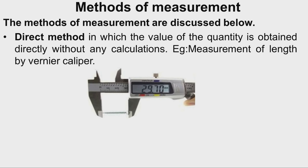Direct method measurement is fast, but there are disadvantages. If you apply more pressure, the moving jaw may compress the workpiece and we may get the wrong result. So sense of feel is very important in this case.